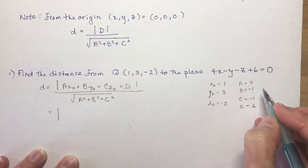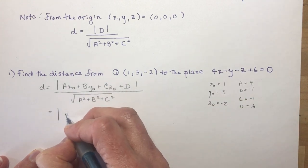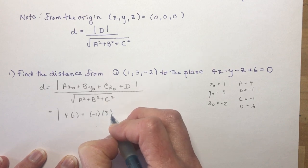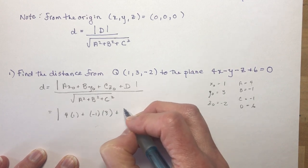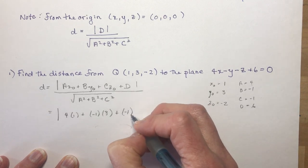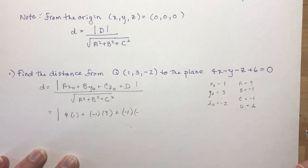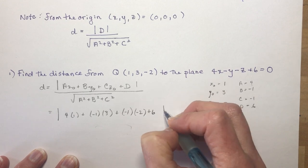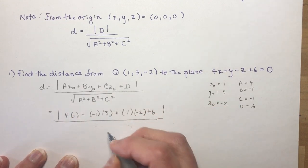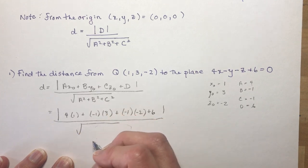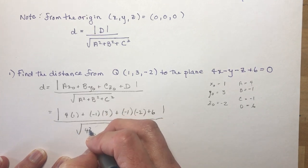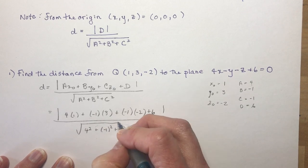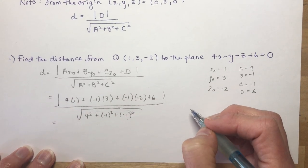Okay, so now all I have to do is substitute in. So I have a, that's 4 times 1 plus b is -1 times y is 3 plus c which is -1 times z which is -2. So this one, getting a little confused here. And I'm dividing by the magnitude of the direction vector. So I'm just going to plug ABC in here. So I have 4 squared plus -1 squared plus -1 squared.